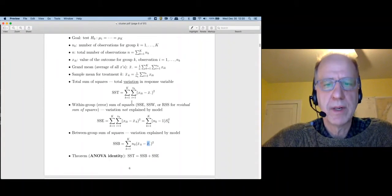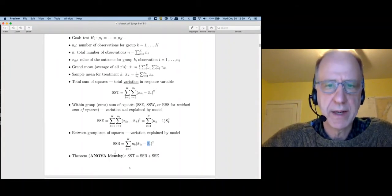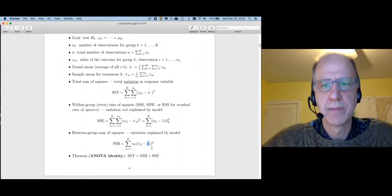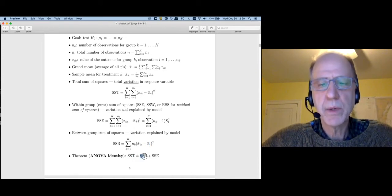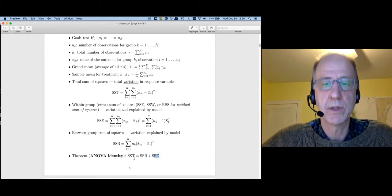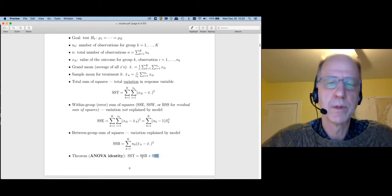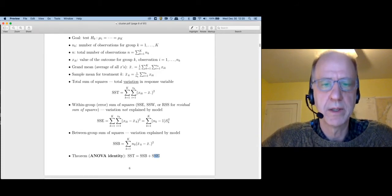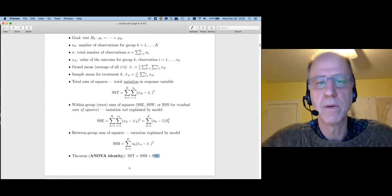Now there's a very important identity. It's called the ANOVA identity, which says this: the total sum of squares equals the between sum of squares plus the within (or error) sum of squares. So total equals between plus within is another way to state the ANOVA identity.